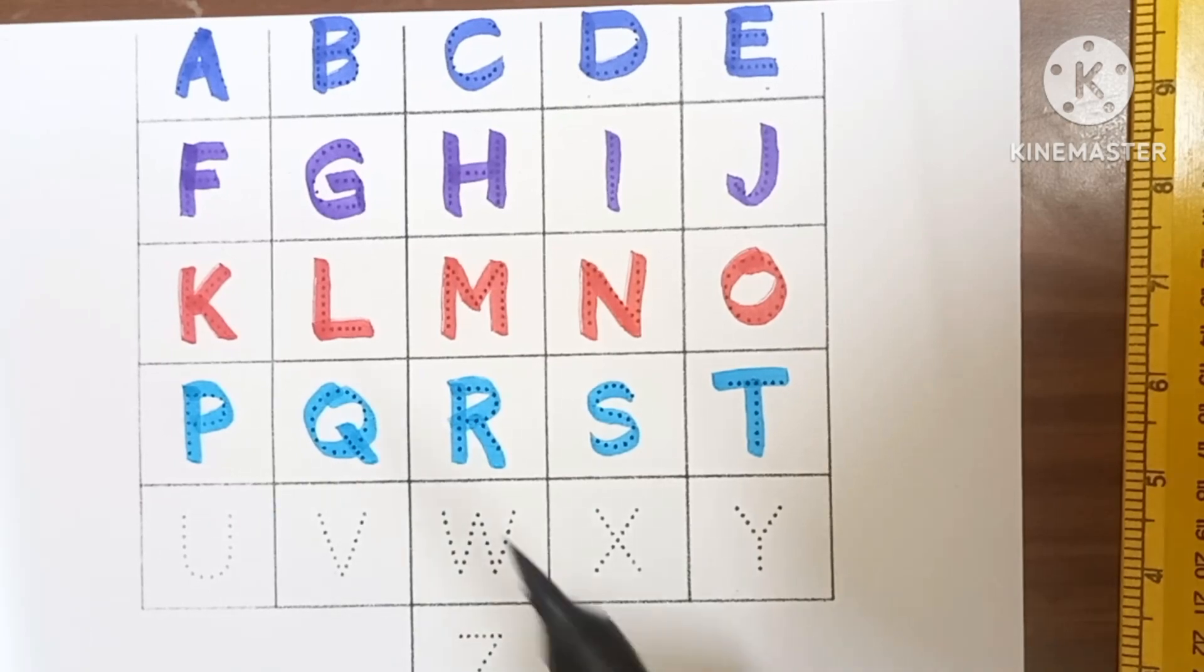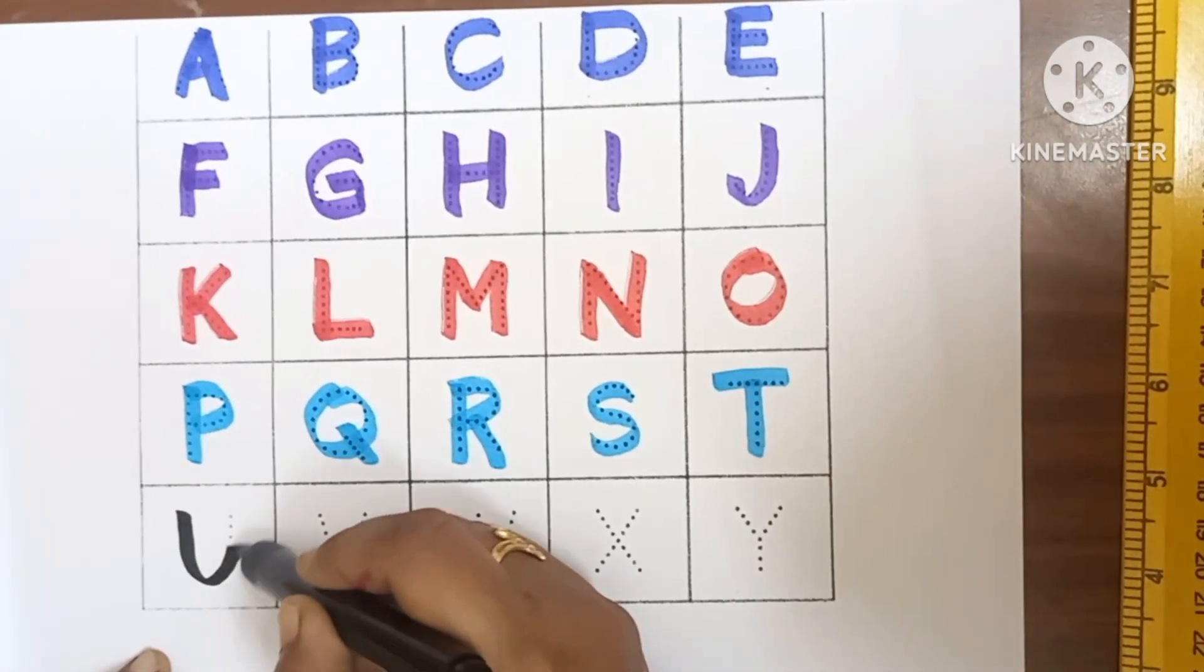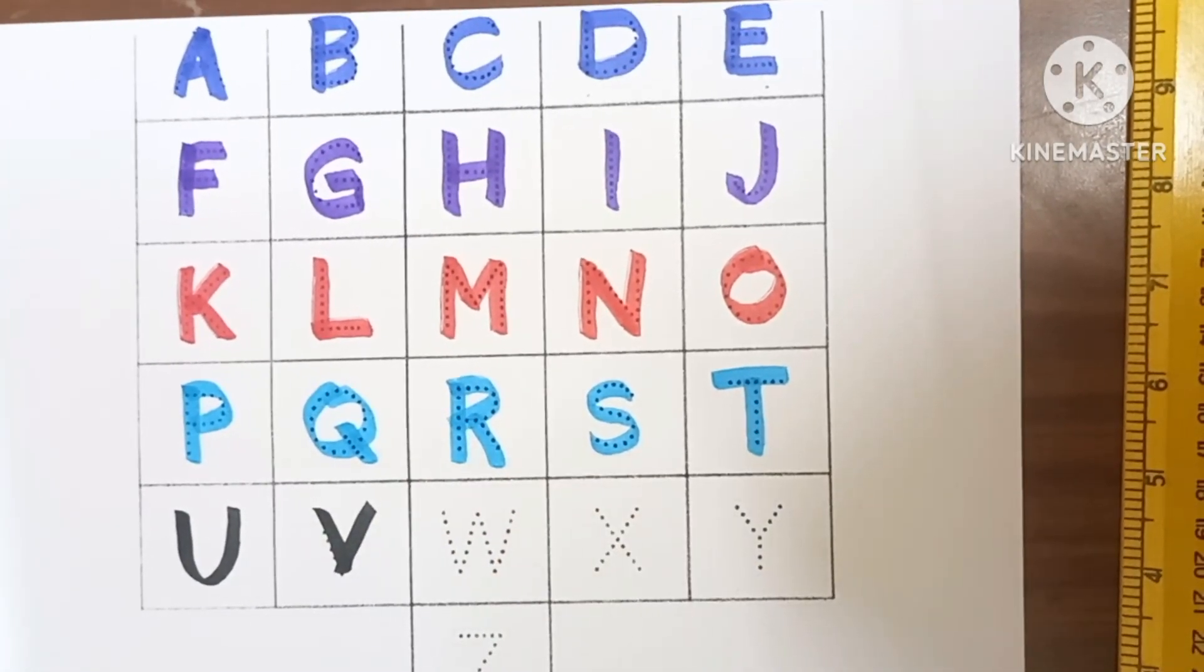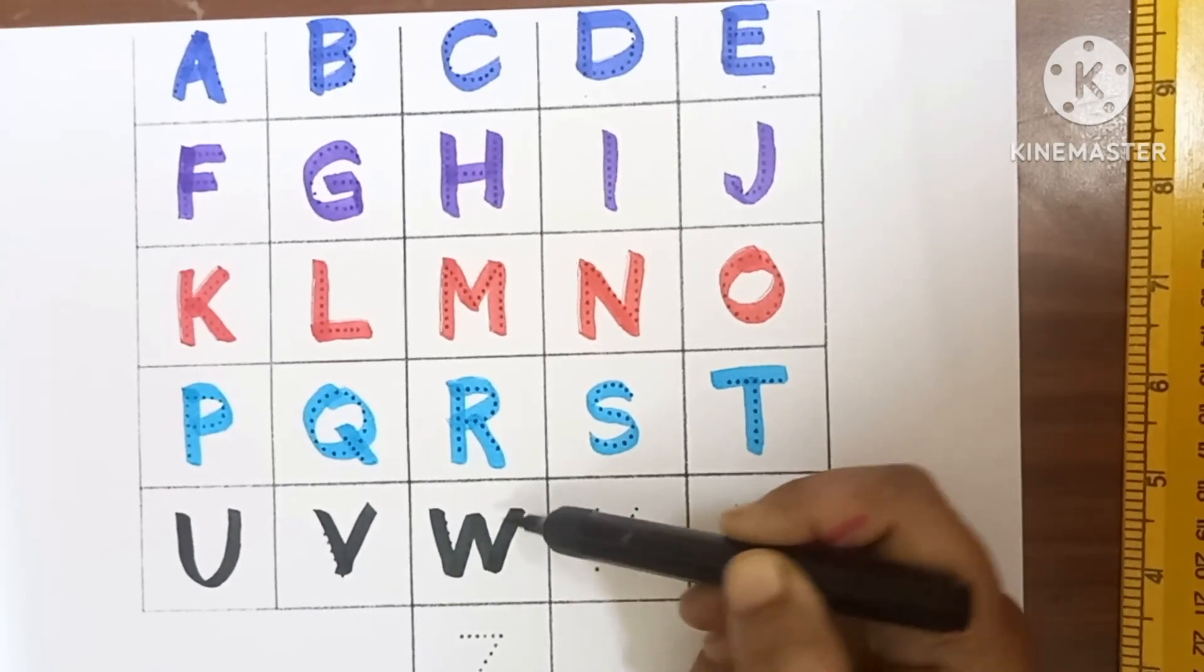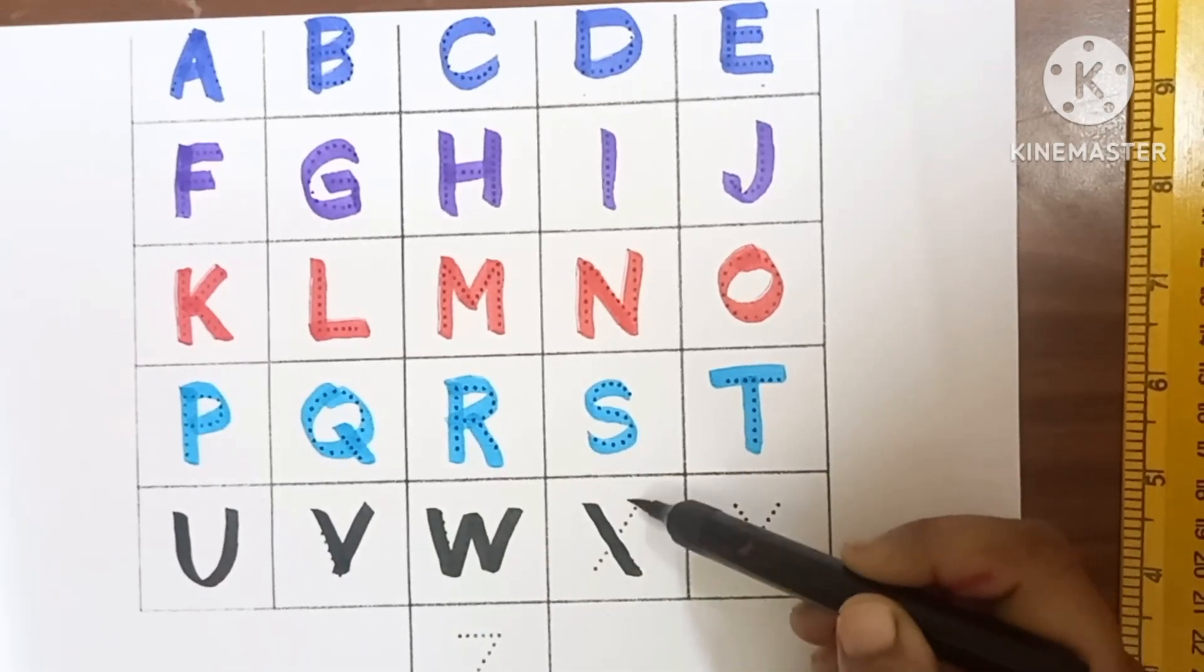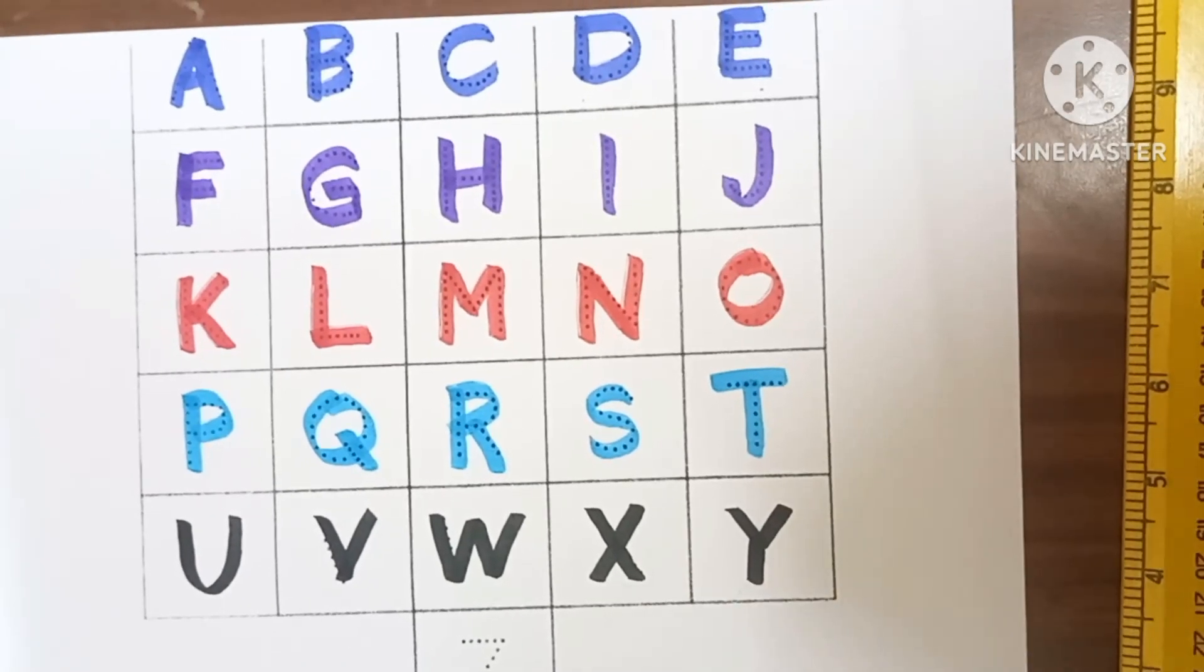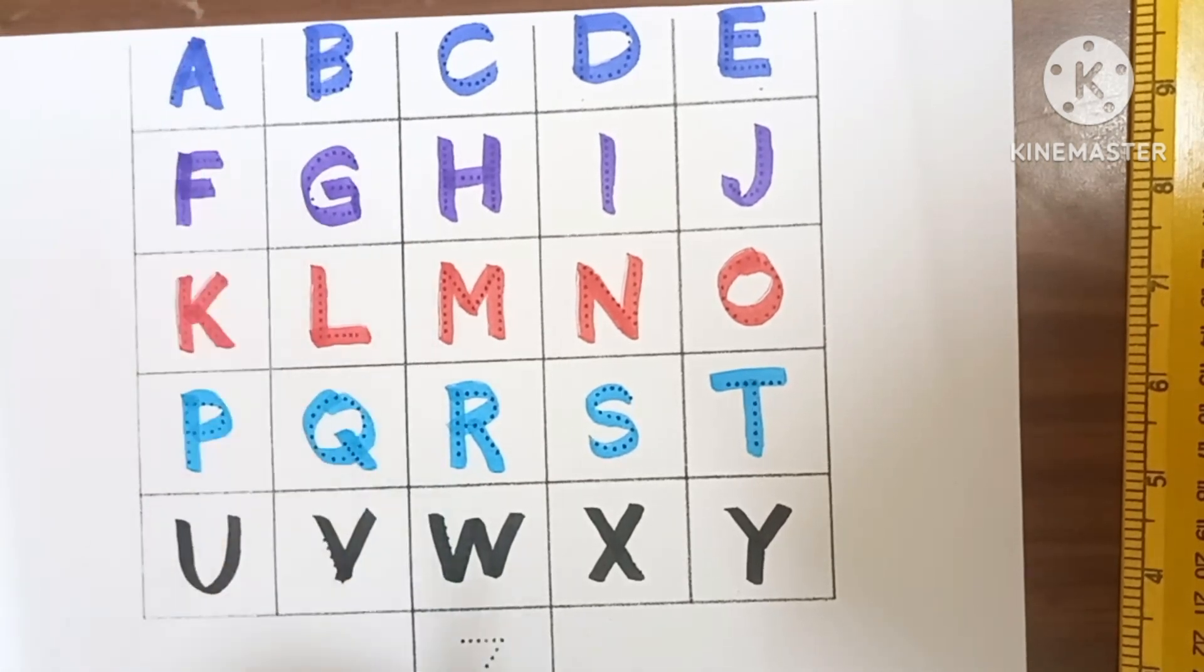Black color. U, U for umbrella. V, V for van. W, W for wax. X, X. Y, Y. Dark green color.